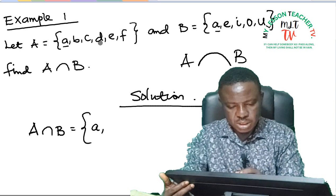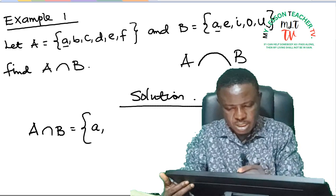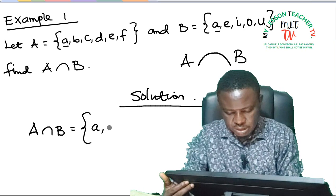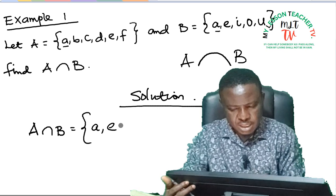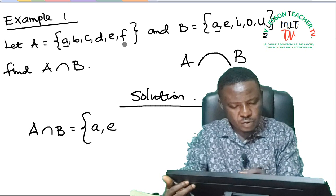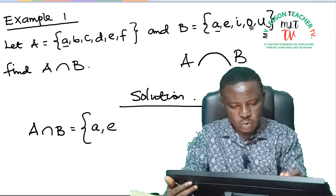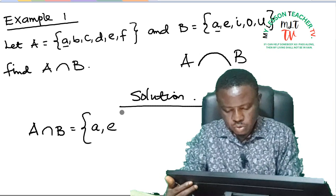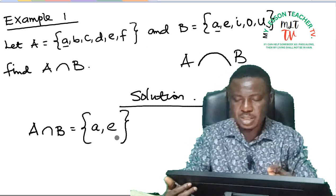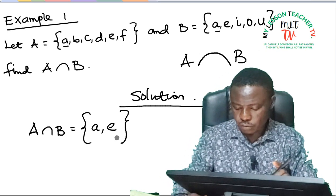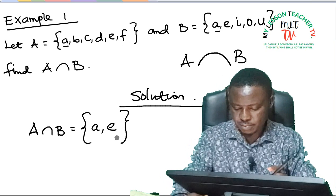We have C, it is not. D, no. E, yes—we have E in both sets. F, no. I, no. O, U, no. So this is said to be the intersection of two sets A and B.